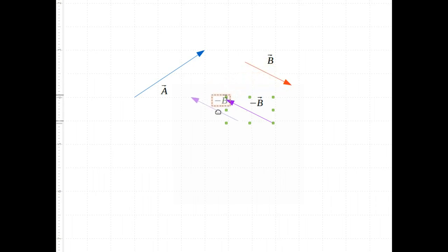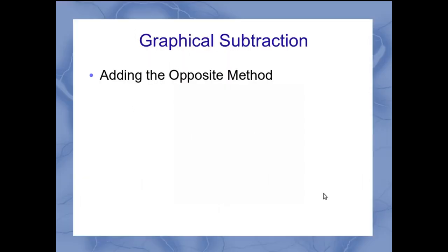Now if I was going to add vector a plus the negative of vector b, then I use my tail to head method here. I go along vector a, and then I go along the path of negative b. And when I do that, the result of adding a and negative b gives me this vector right over here. So again, here's my adding the opposite method. I go along my vector a, along the negative of b, and that gives me my vector a plus a negative b.